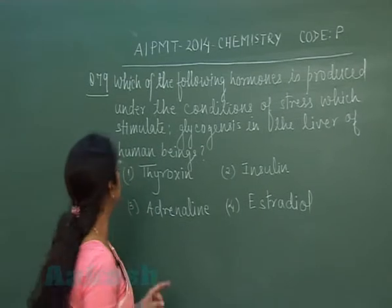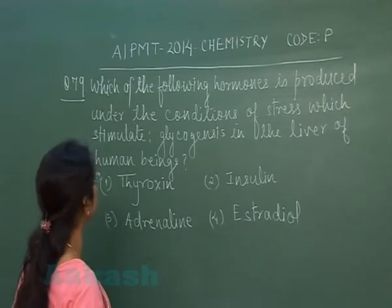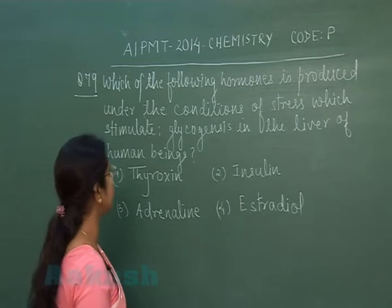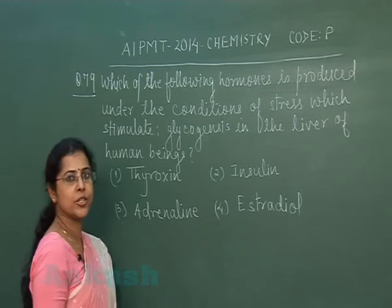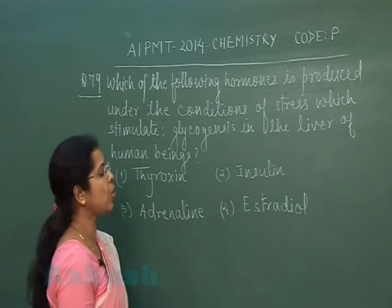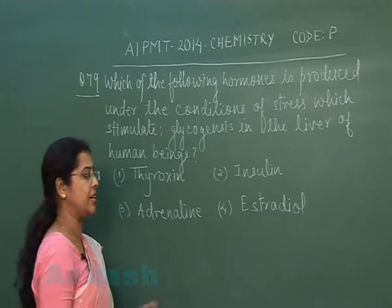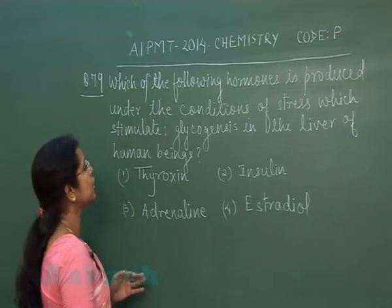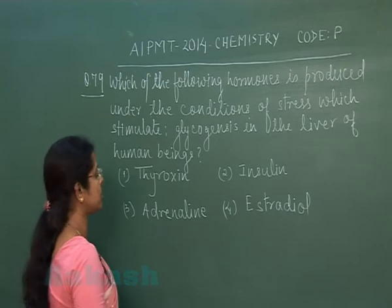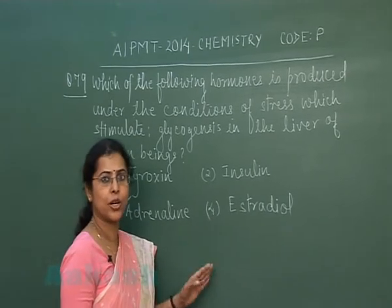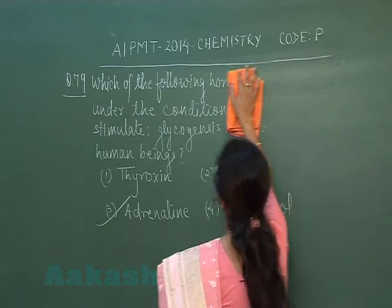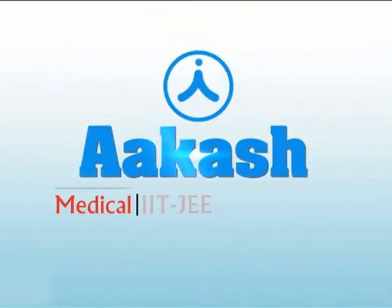Question number 79: Which of the following hormones is produced under conditions of stress and stimulates glycogenesis in the liver of human beings? The options are: first, thyroxine; second, insulin; third, adrenaline; fourth, estradiol. The hormone associated with stress that stimulates glycogenesis is adrenaline, so the correct option is the third one: adrenaline.